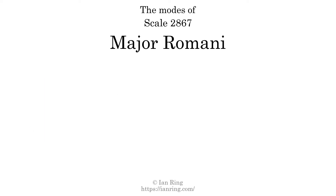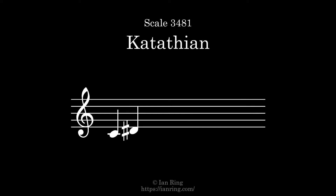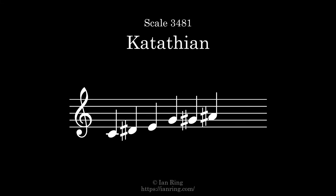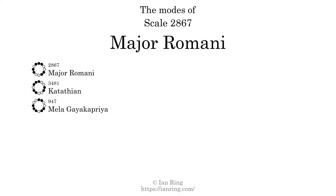This scale has 7 modes. The first mode is itself. The second mode is scale 3481, also known as Catathion. The third mode is scale 947, also known as Mila Gea Capriar.